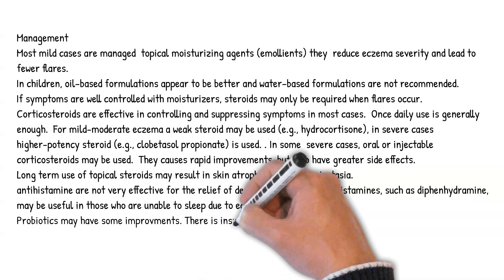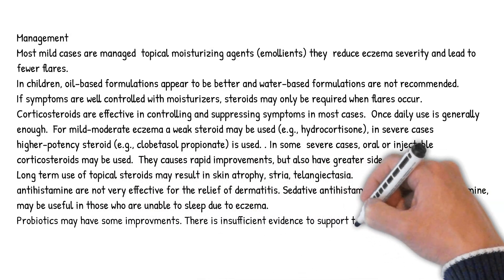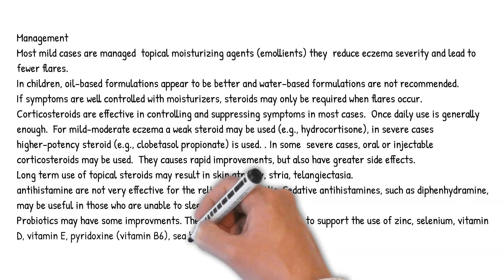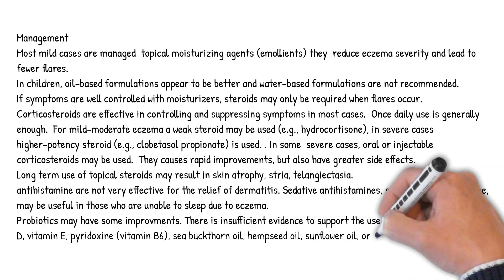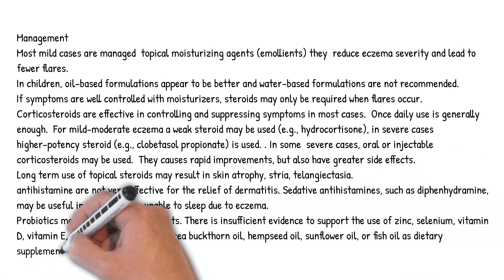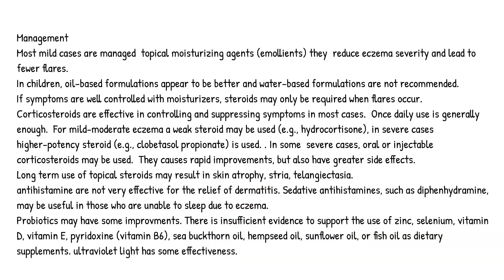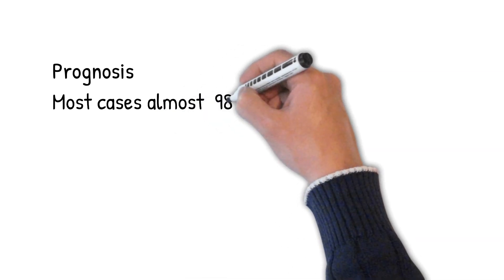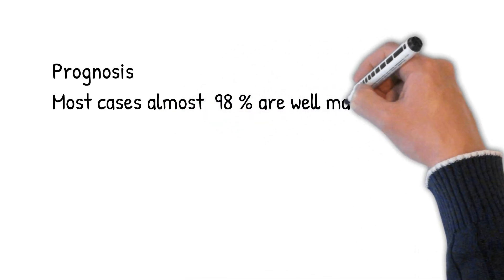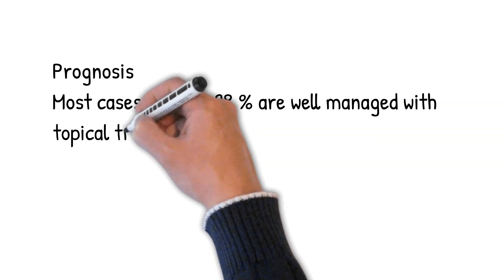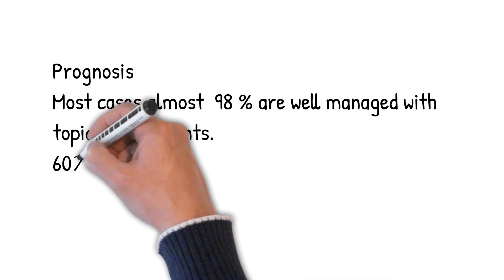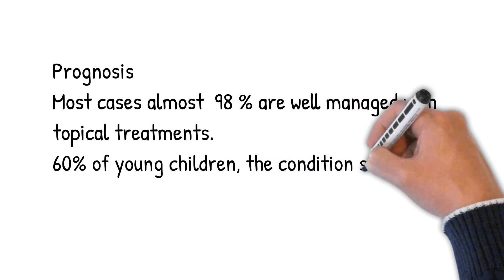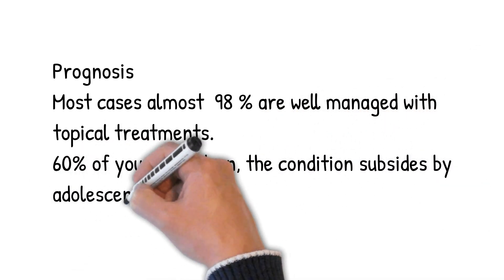There is also insufficient evidence for sea buckthorn oil, hemp seed oil, sunflower oil, or fish oil as dietary supplements. Ultraviolet light has some effectiveness. Prognosis: most cases — almost 98% — are well managed with topical treatments. In 60% of young children, the condition subsides by adolescence. Globally, dermatitis affected approximately 230 million people as of 2010, representing 3.5% of the population. Dermatitis is most commonly seen in infancy, with female predominance of eczema presentations occurring during the reproductive period of 15 to 49 years.